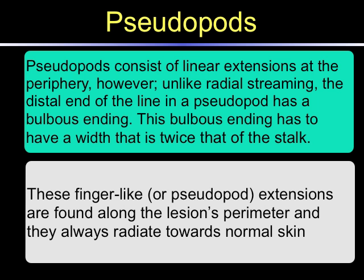Pseudopods are also considered to be streaks. They consist of linear extensions at the periphery of the tumor. However, unlike radial streaming, the distal end of the line in a pseudopod culminates with a bulbous ending. This bulbous ending must have a width that is at least twice the width of the line, or stalk, on which it resides.